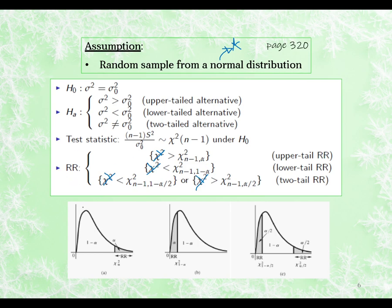For an upper tail test, alpha will be in the upper tail — quite straightforward. For a lower tail test, the rejection region is in the lower tail with area alpha, which means the area to the right is 1 minus alpha, so we refer to this as chi-squared one-minus-alpha. For a two-sided test, it's alpha over 2 in both tails. The upper critical value is chi-squared alpha-over-2, and the lower critical value is chi-squared one-minus-alpha-over-2, because 1 minus alpha plus alpha over 2 gives 1 minus alpha over 2.